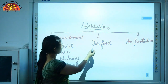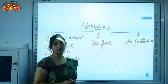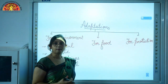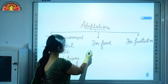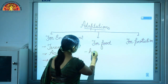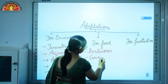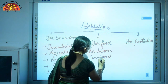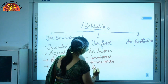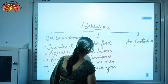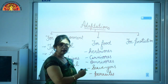In this video we will discuss adaptations for food and adaptations for protection. Now, different types of animals eat different types of food. Some are plant-eating, some are flesh-eating. On this basis, animals are categorized as herbivores, carnivores, omnivores, scavengers, and parasites. We will study each of these in detail now.